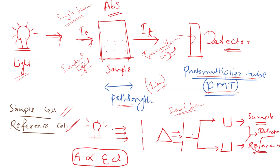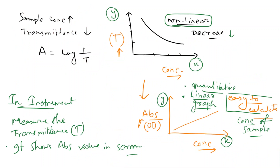There is also the dual beam configuration, where the light is split. One beam passes through the sample cuvette and the other through a reference cuvette containing distilled water. This gives a corrected, accurate reading of how much absorbance the sample produces.